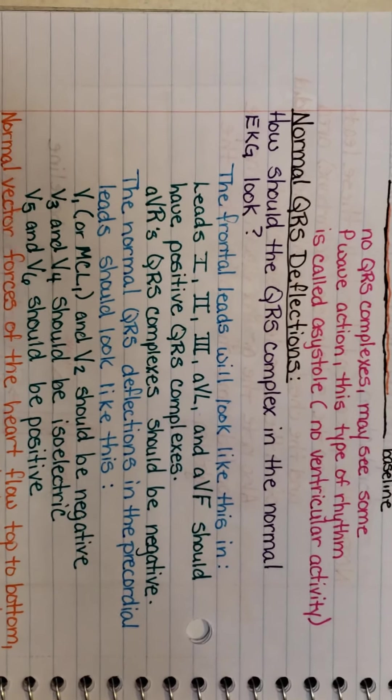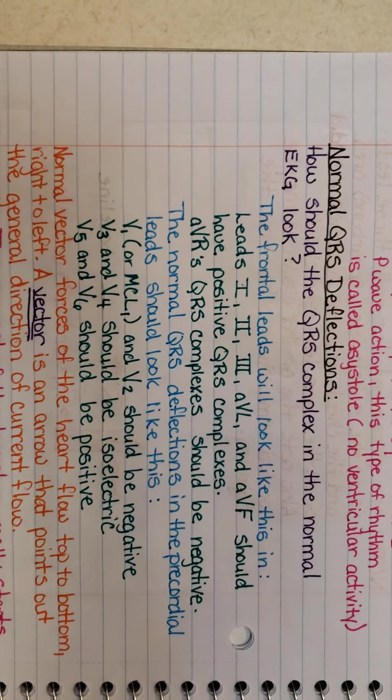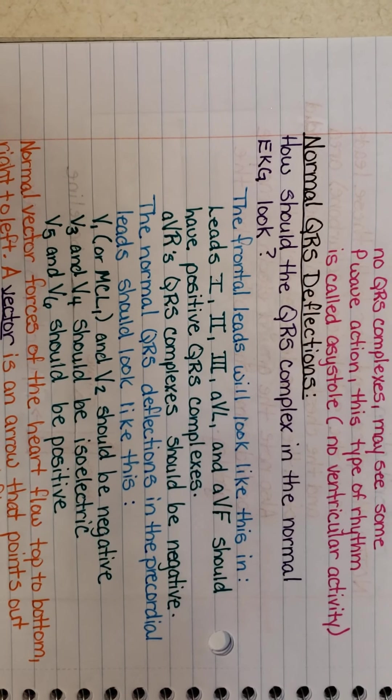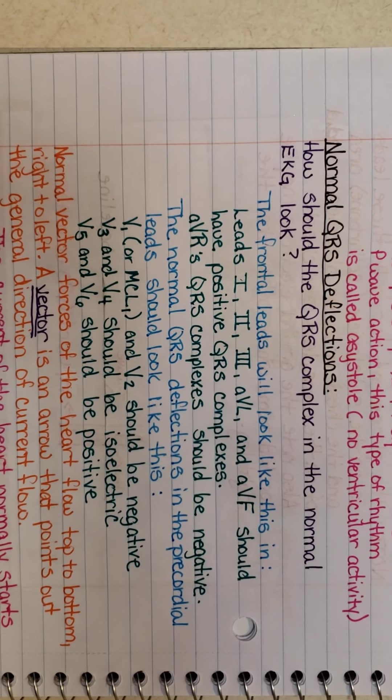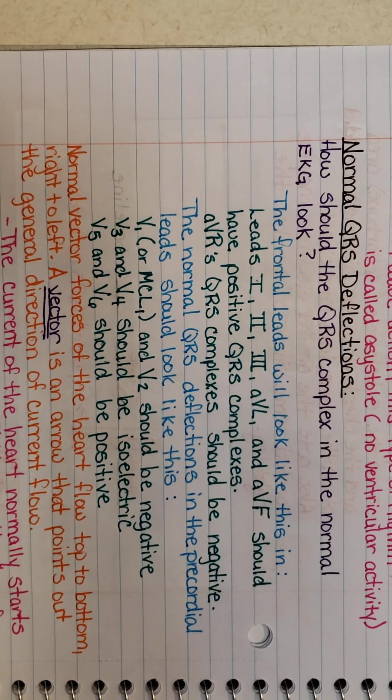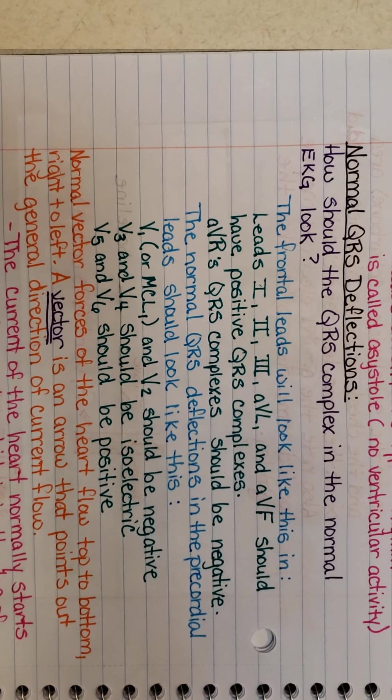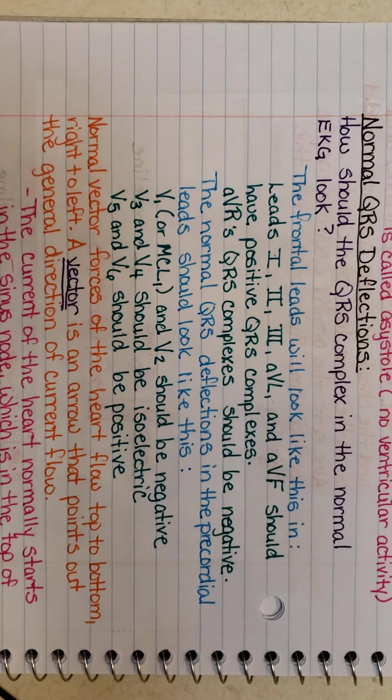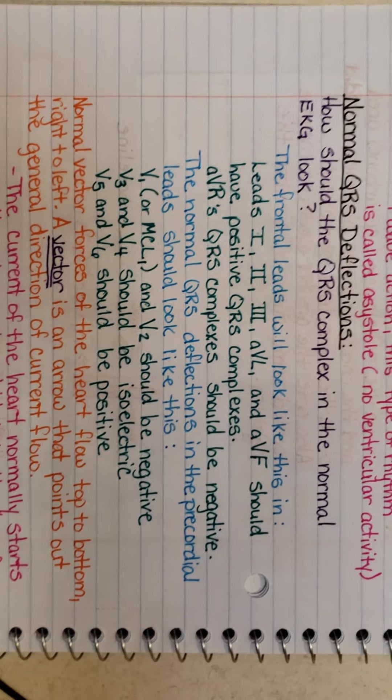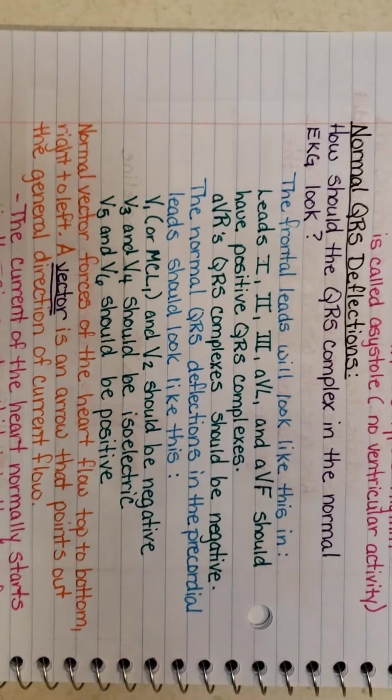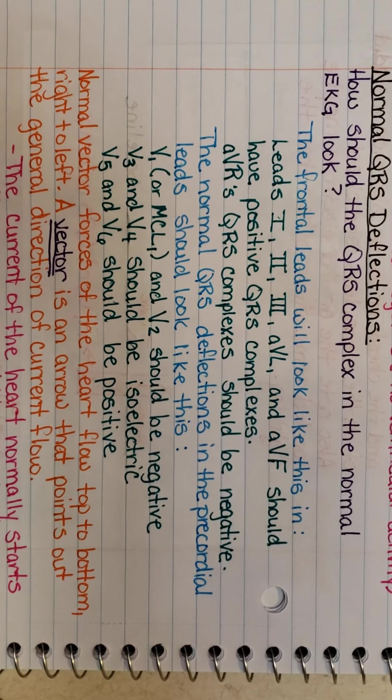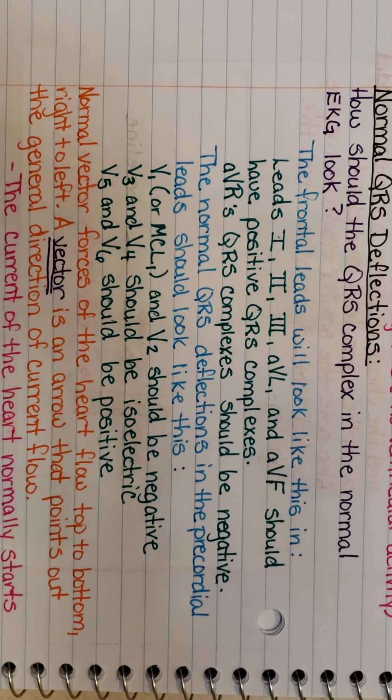Normal QRS deflection. How should the QRS complex in a normal EKG look? Well, the frontal leads will look like this in leads one, two, three, AVL and AVF. They all should have positive QRS complexes, meaning their QRS complexes should be in the upright position, meaning your R waves should be going up and not down.